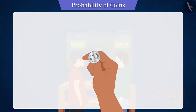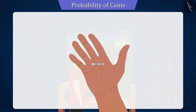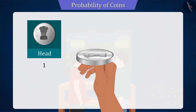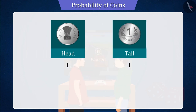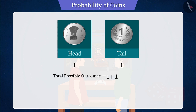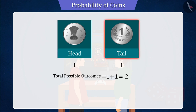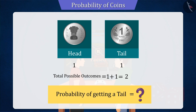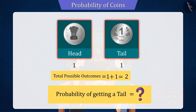So let's first look at the outcomes when the coin is tossed. As you can see, when the coin is tossed, it gives only two possible results, which will be either the head or the tail. Now the question is, what is the probability of getting the tail? As we know that tossing a coin gives two possible results, out of which there is only one possibility of tail.